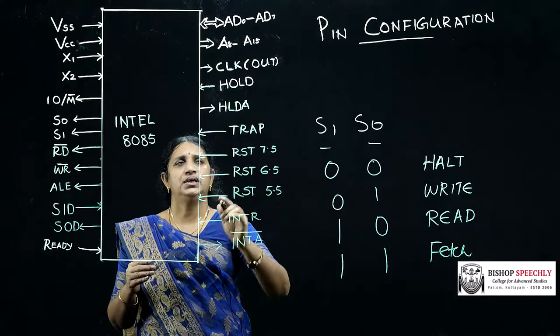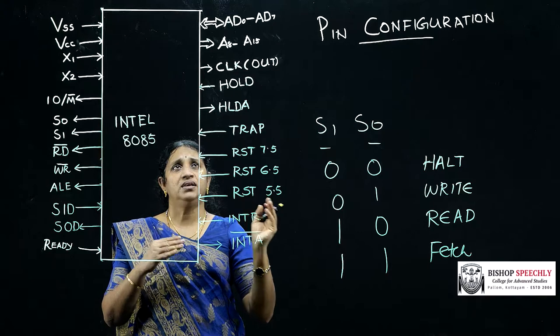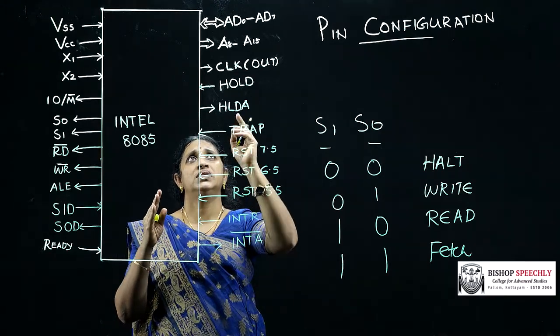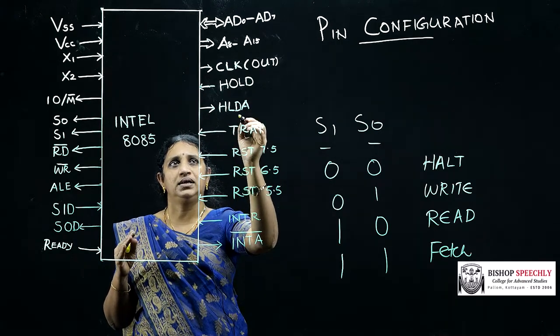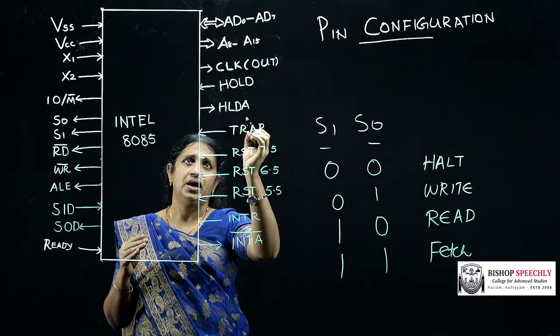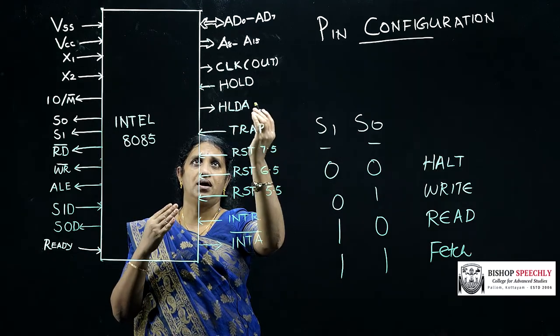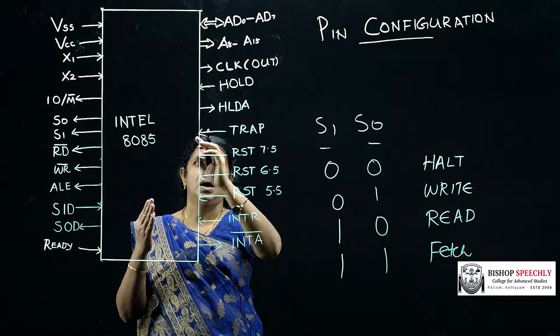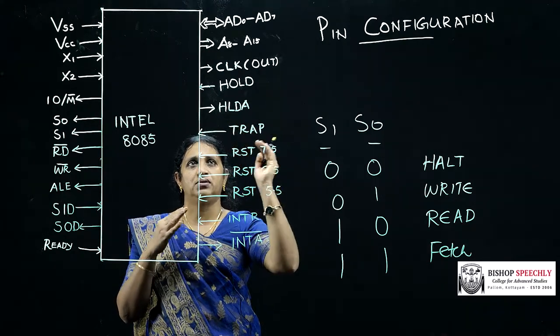The next pin is HOLD. This pin is used when another device has to use AD bus for data transfer. The next pin HLDA is hold acknowledgement and it is used when there is a hold signal arrives to the microprocessor and this indicates an acknowledge to that particular device.